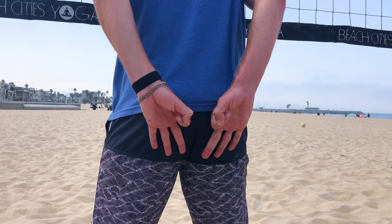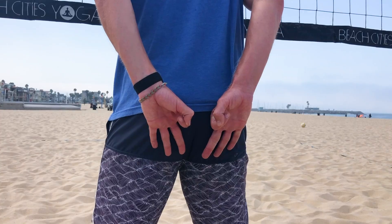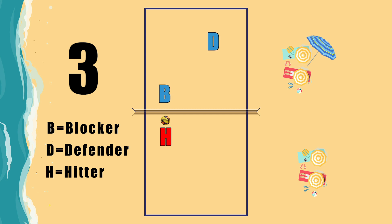A three block is the opposite. The blocker acts like they are taking cross court and the defender acts like they're taking line, and then at contact they switch — the blocker takes away the line hit and the defender runs to pick up the cut shot.